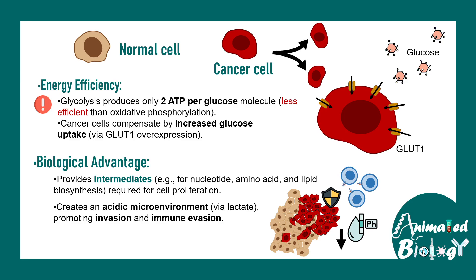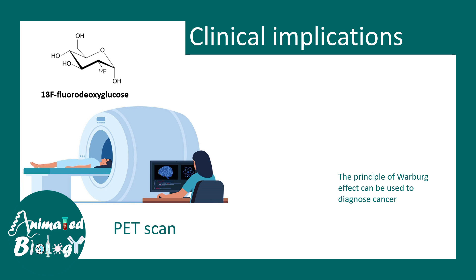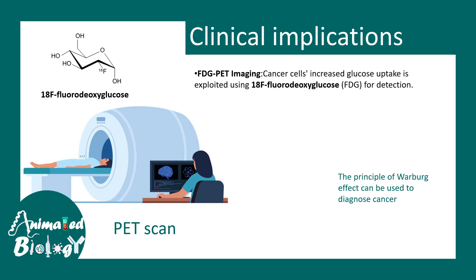The principle behind the Warburg effect is actually used to image cancer progression in the body. PET scanning works on this principle — 18-F fluorodeoxyglucose (FDG) is used as a tracer. FDG-PET imaging is based on the principle that cancer cells take up a lot of glucose, and this labeled glucose can be monitored in the imaging system.